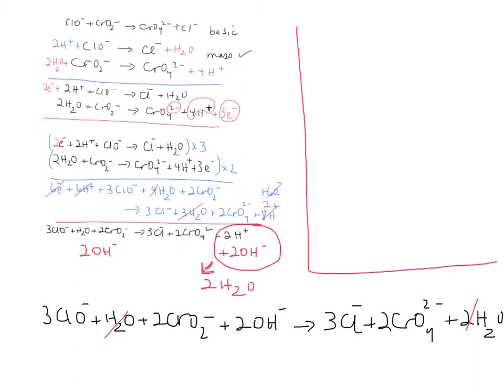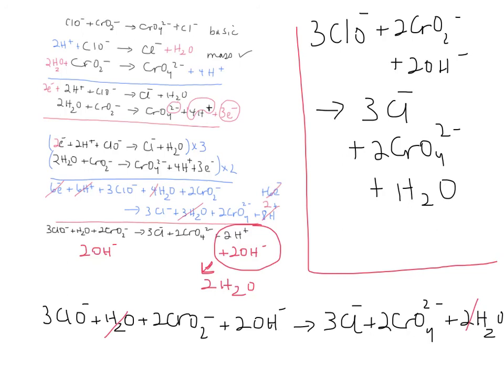The final reaction is going to be 3ClO⁻, plus 2CrO₂⁻, plus 2OH⁻, forms 3Cl⁻, plus 2CrO₄²⁻, plus water. And then you want to check for balance again. I'm just going to look at my notes here to see. Make sure we got it all right and it looks good. Alright, thanks.